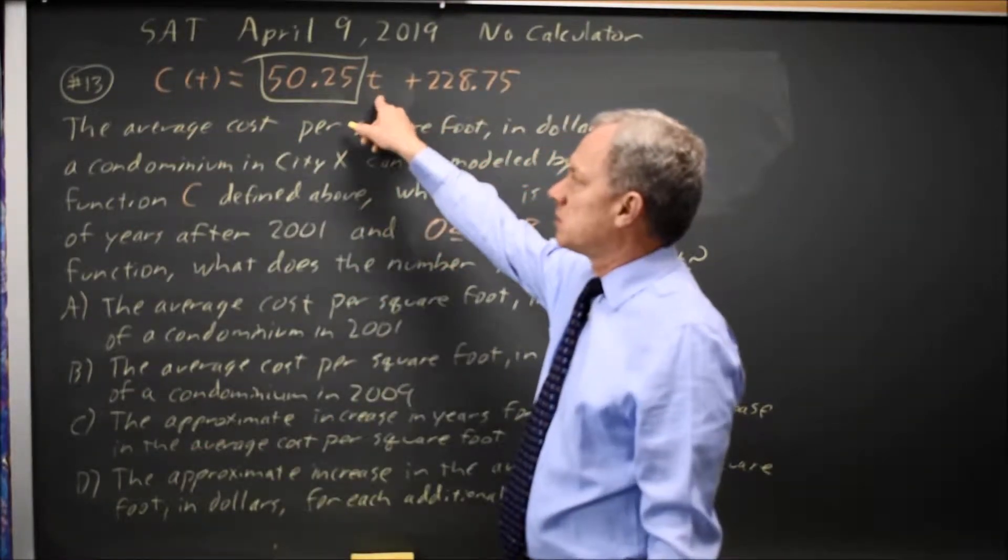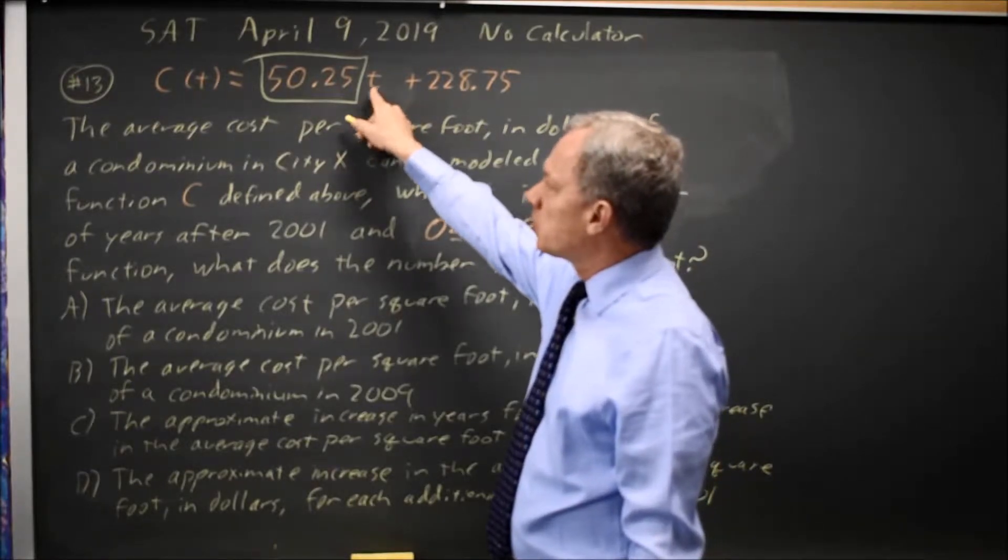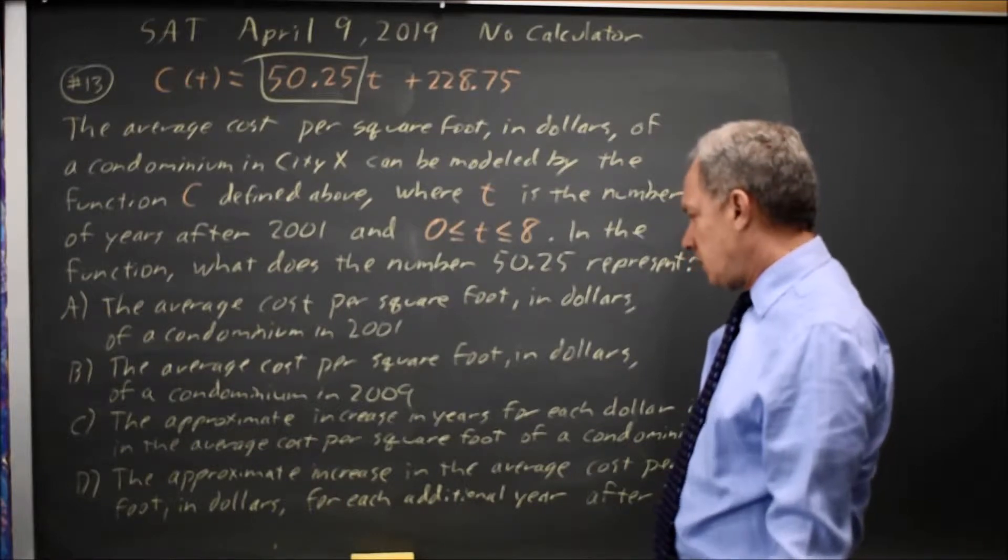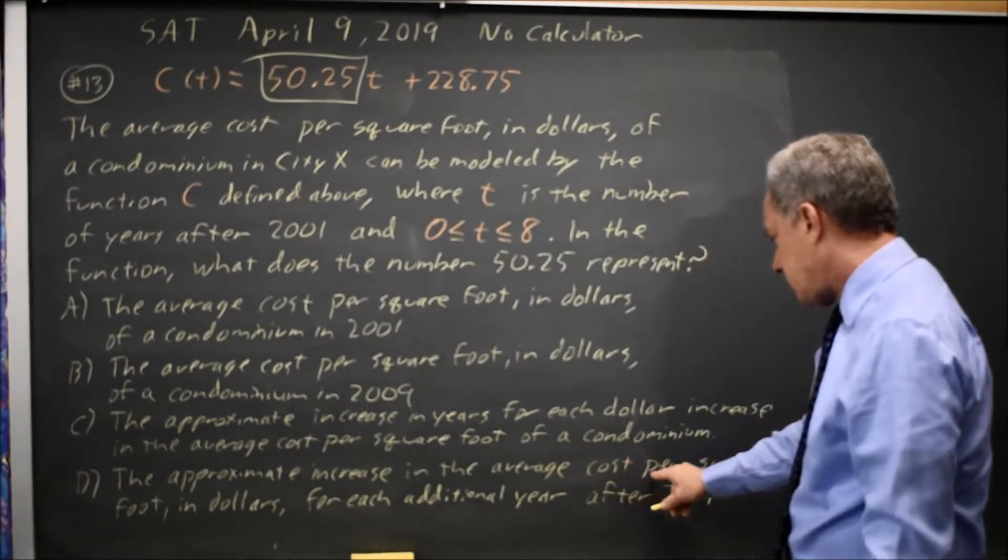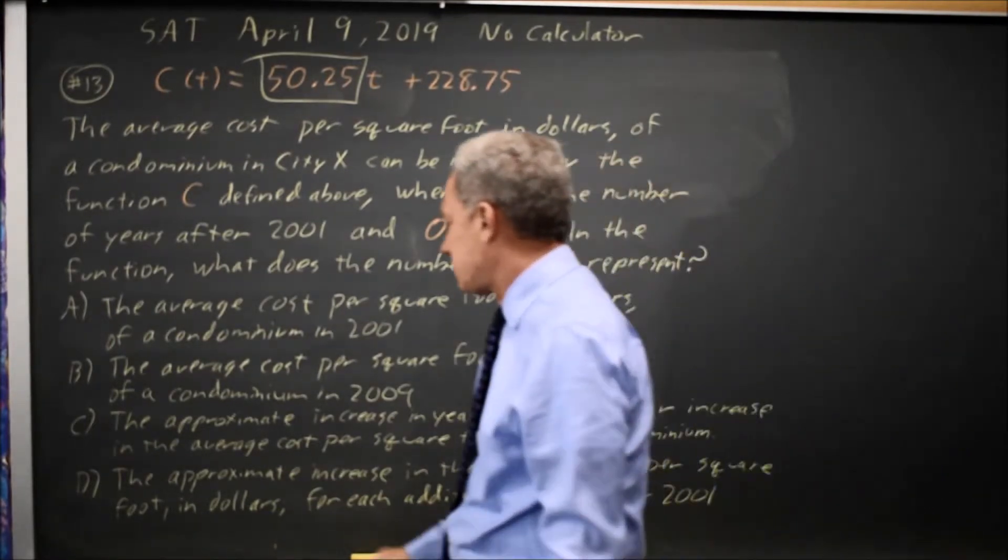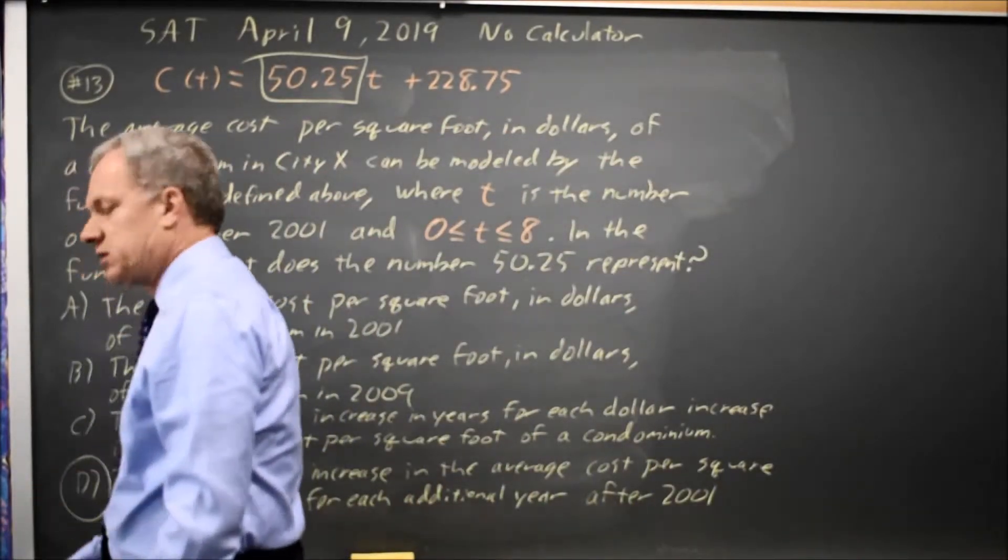the cost goes up by 50.25, where t is the year. So when years increases by one, cost increases by 50.25 per square foot. And that sounds like cost per square foot in dollars for each additional year after 2001. The correct answer is d.